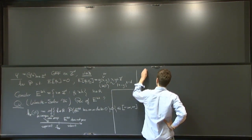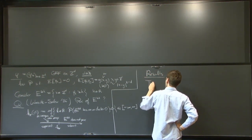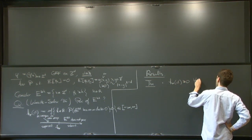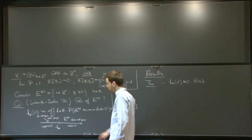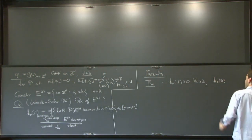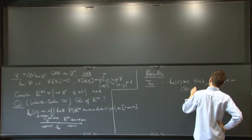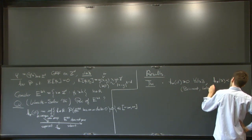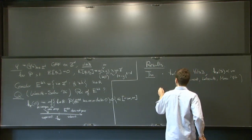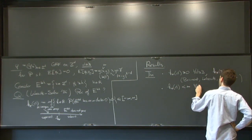Now some known results. Here's the theorem. First of all, h*(d) is greater or equal to zero for any d greater or equal to 3. That means you have an infinite cluster above every negative level, be it as small as you like. Also, in dimension 3, h* is finite. So you have a non-trivial phase transition in dimension 3. These results are due to Brickmont, Leibovitz, and Mass in a paper from 1987.